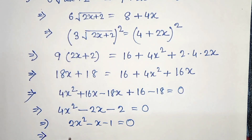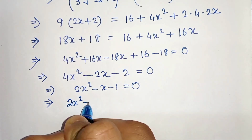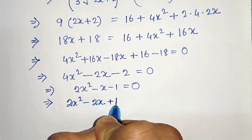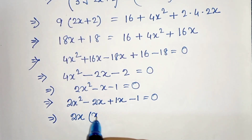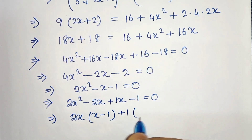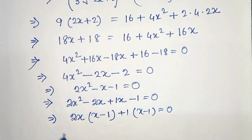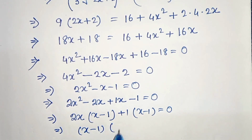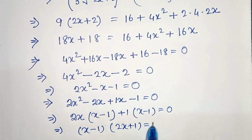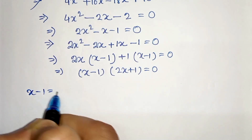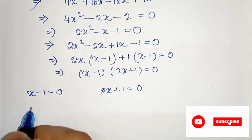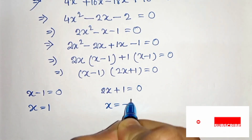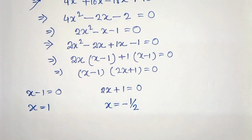Now we factorize 2x² - x - 1. We split as 2x² - 2x + x - 1 = 0. Taking 2x common from the first pair: 2x(x - 1), and 1 common from the second: +1(x - 1) = 0. So (x - 1)(2x + 1) = 0, giving x - 1 = 0 → x = 1, and 2x + 1 = 0 → x = -1/2.